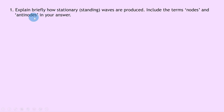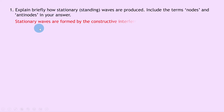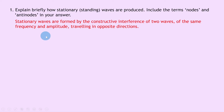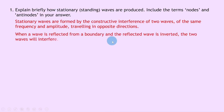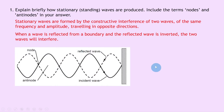Question 1 says to explain briefly how stationary (i.e. standing) waves are produced, and to include the terms nodes and antinodes in your answer. Remember from the notes that stationary waves are formed by the constructive interference of two waves of the same frequency and amplitude traveling in opposite directions. We say that when a wave is reflected from a boundary and the reflected wave is inverted, the two waves will interfere, and if you were to draw a diagram it would look something like this.